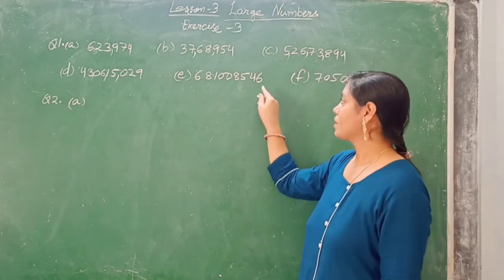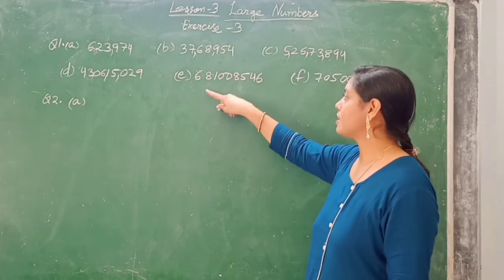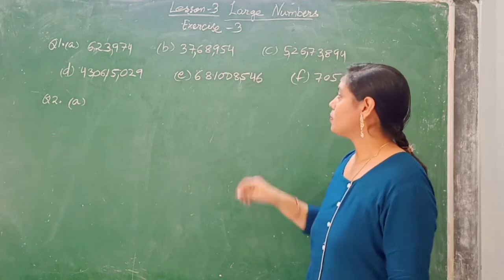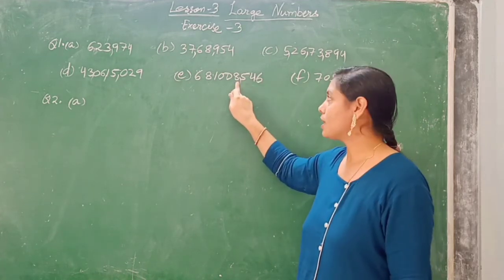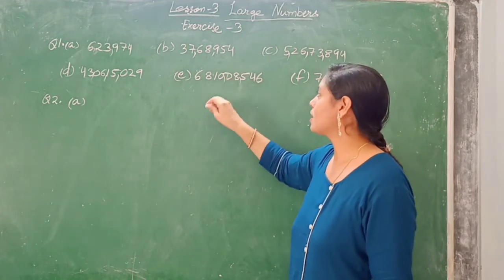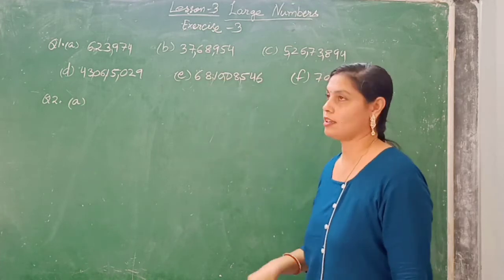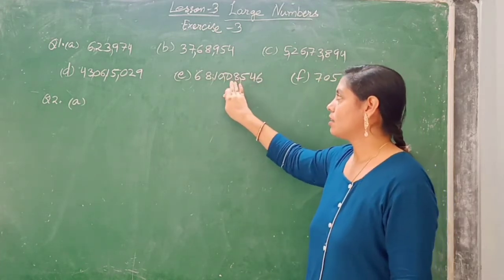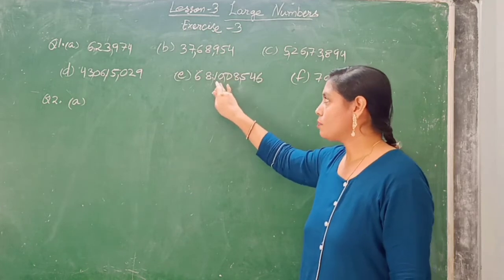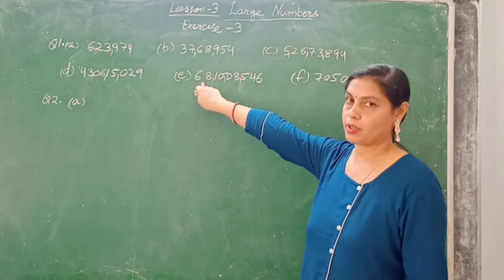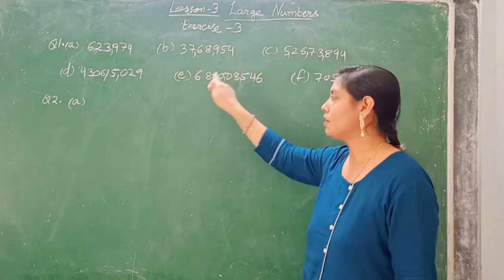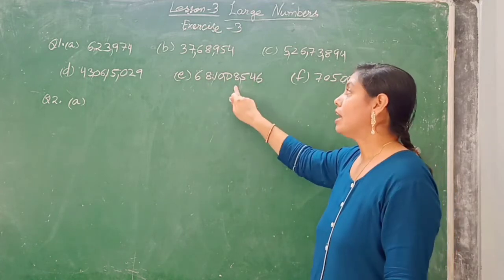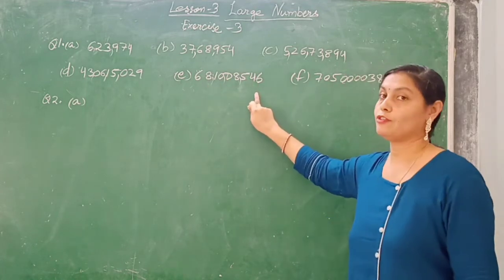Isko karte hain — right se left jaenge: three numbers ke baad comma lagana hai, phir two numbers ke baad comma, phir two numbers ke baad comma. So: ones period, thousands period, lakhs period, and crores period. Toh 68 crore, 10,08,546.